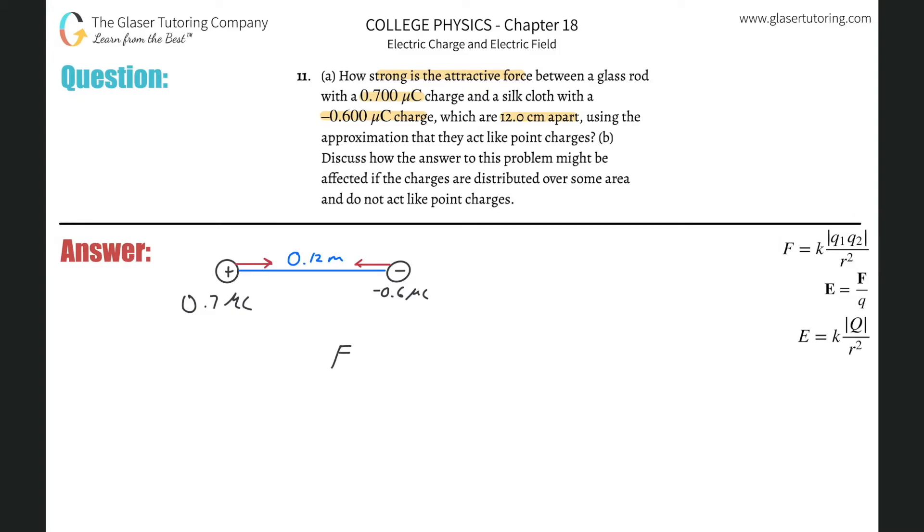The force of attraction or repulsion on two charged objects is going to equal the electrostatic constant k multiplied by the absolute value of the product q1 and q2 of the two charges, divided by the distance between them squared.